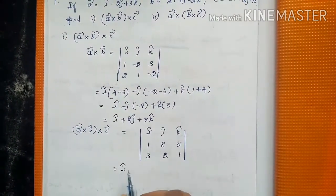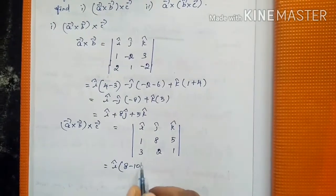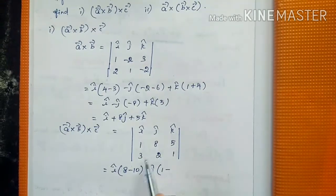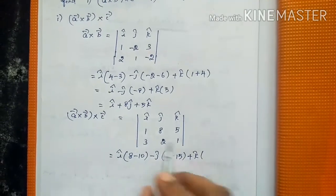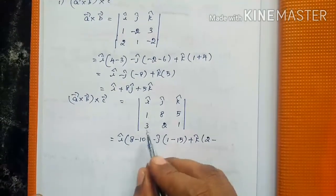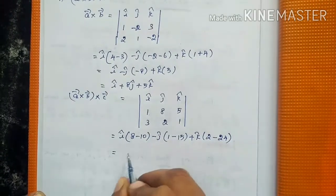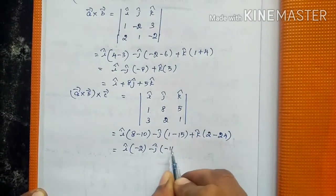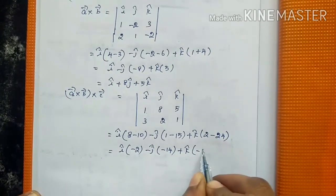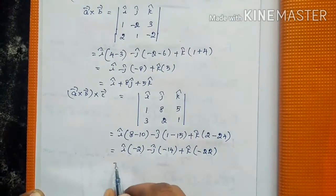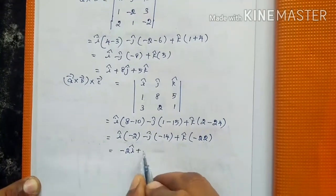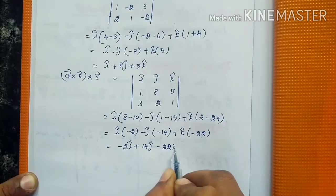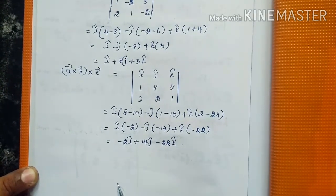Expanding: î into (8 - 10), minus ĵ into (1 - 15), plus k̂ into (2 - 24). This equals î(-2), minus ĵ(-14), plus k̂(-22). So the answer for the first subdivision is -2î + 14ĵ - 22k̂.